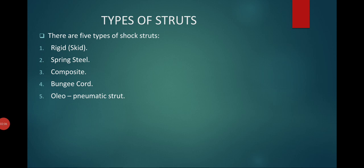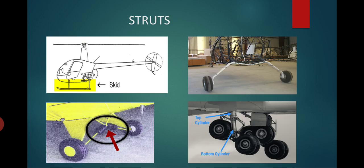The following are the types of struts. Struts are divided based on usage and working principles: rigid, spring steel, composite, bungee cord, and oleo-pneumatic struts. Rigid struts are used in helicopters today. Bungee cord struts are used in small jets or small aeroplanes. The oleo strut shock absorber is currently used in all heavy aircraft.